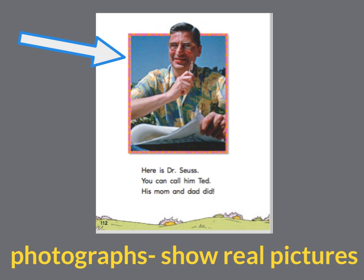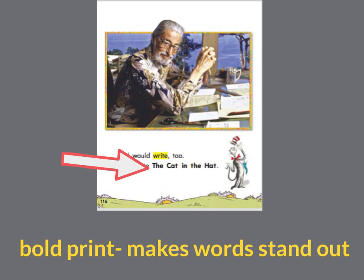The arrow is pointing to a part on this page. What do we call the part that the arrow is pointing to? It's a photograph. Photographs show real pictures, so this is a real picture of Dr. Seuss. Let's look at this page from our story. My arrow is pointing to some words.